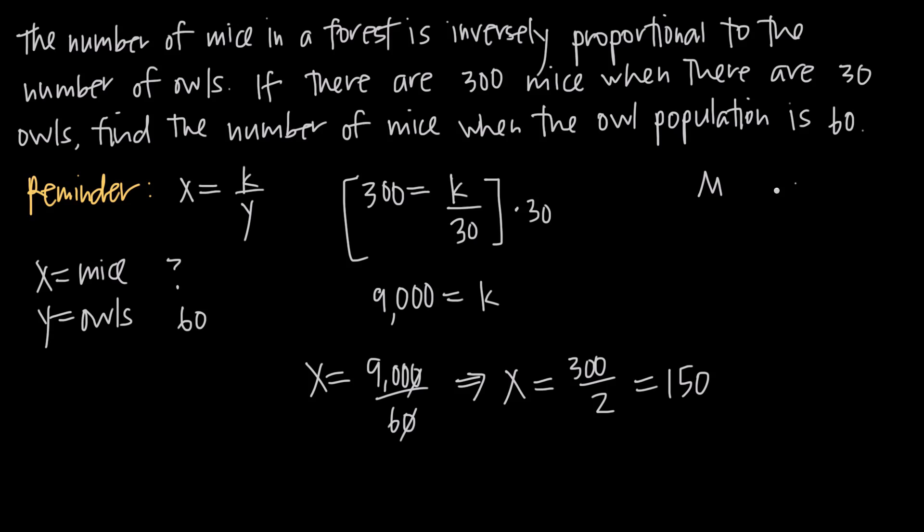Now if we graph this, we know that there were 300 mice when there were 30 owls and we just found that there are going to be 150 mice when there are 60 owls. So we can see that we have an inverse relationship between mice and owls because when owls increased, owls went from 30 to 60, mice decreased, mice went from 300 to 150. So this is kind of a predator-prey relationship where when the number of owls increases, they eat more mice and so the mice population decreases.